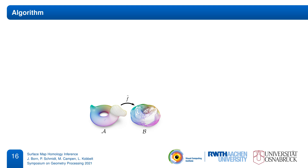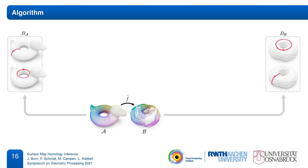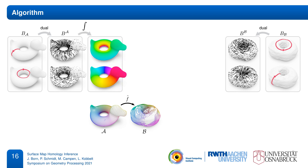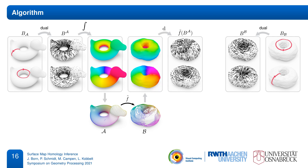We start with two surfaces A and B and an input map between them, approximating an unknown homeomorphism. First, we compute homology bases of the two surfaces — our goal is to find the matrix that maps between them. Next, we compute the corresponding dual cohomology bases. We now use the input map to transport the basis co-cycles from A to B, going through the process of integrating to periodic potentials on A, mapping to B with interpolation, and differentiating again to obtain co-cycles.